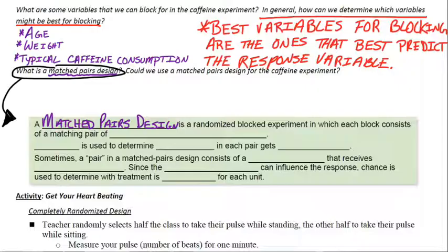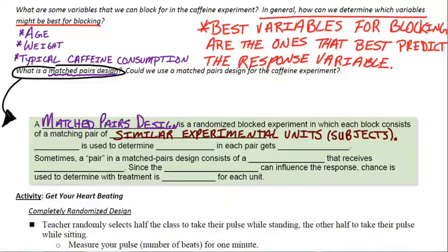It's a randomized block experiment. It's actually just a small one. It's a little mini one. In which each block consists of a matching pair. A pair you're thinking of two, I hope. So it's got a matching pair of similar experimental units. Experimental units is just a fancy way to say like subjects, like people in an experiment. If they're not people though, we don't call them subjects, we call them experimental units. So it's a specific case for a block design. There's only two of them. They're a similar pair.